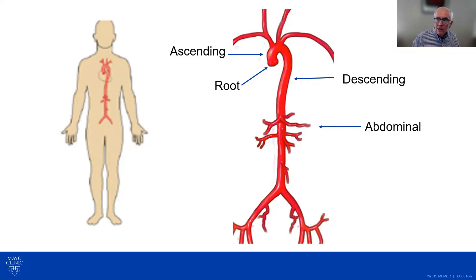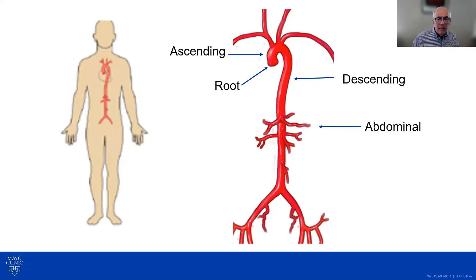As you can see, the aorta is the major artery in the body. You can see a little outline of the heart on the left, and the aorta comes out of the heart and carries the blood out to the rest of the body. The very beginning of the aorta is called the aortic root — some people also refer to this as the sinuses of Valsalva — and this is where the coronary arteries arise and go out to supply blood flow to the heart.